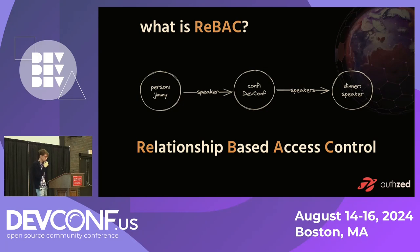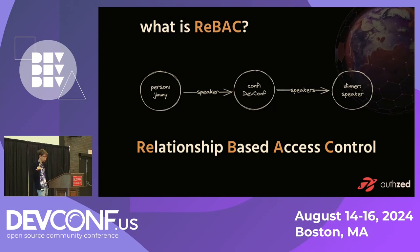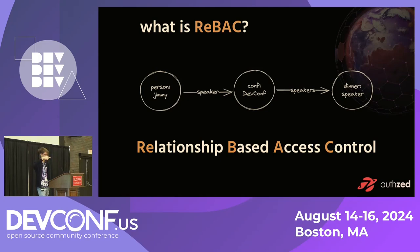That's exactly what relationship-based access control is: if you can follow a chain of relationships between a particular entity and another one, that means you have access. On the slide, the example is: Jimmy is a speaker at DevConf, and DevConf speakers have access to the speaker dinner. So you can ask 'does Jimmy have access to the speaker dinner?' — and by following that chain, you find that he does. This can get arbitrarily complex.